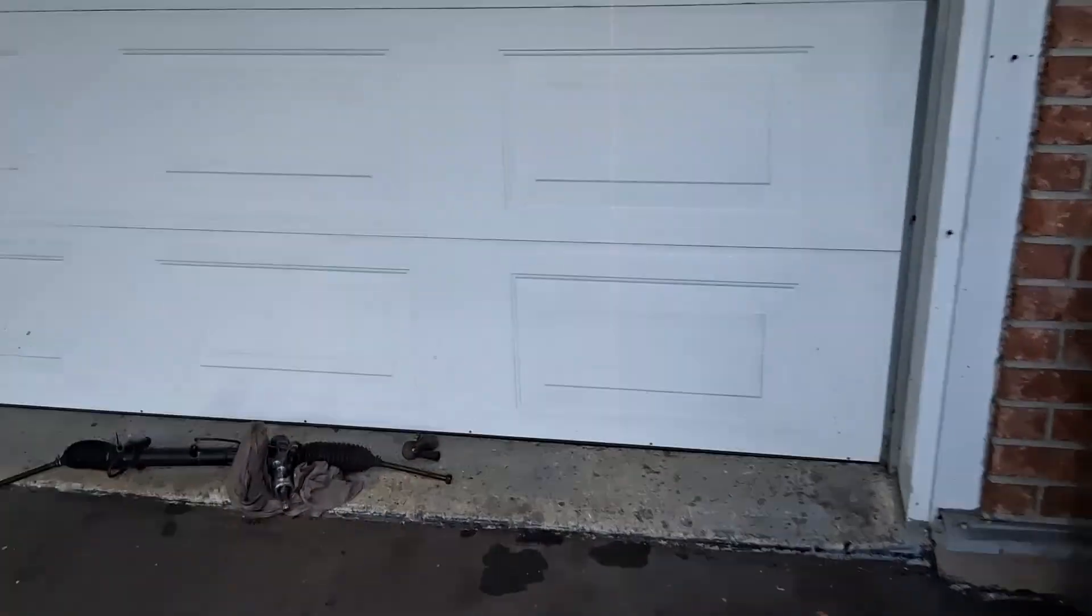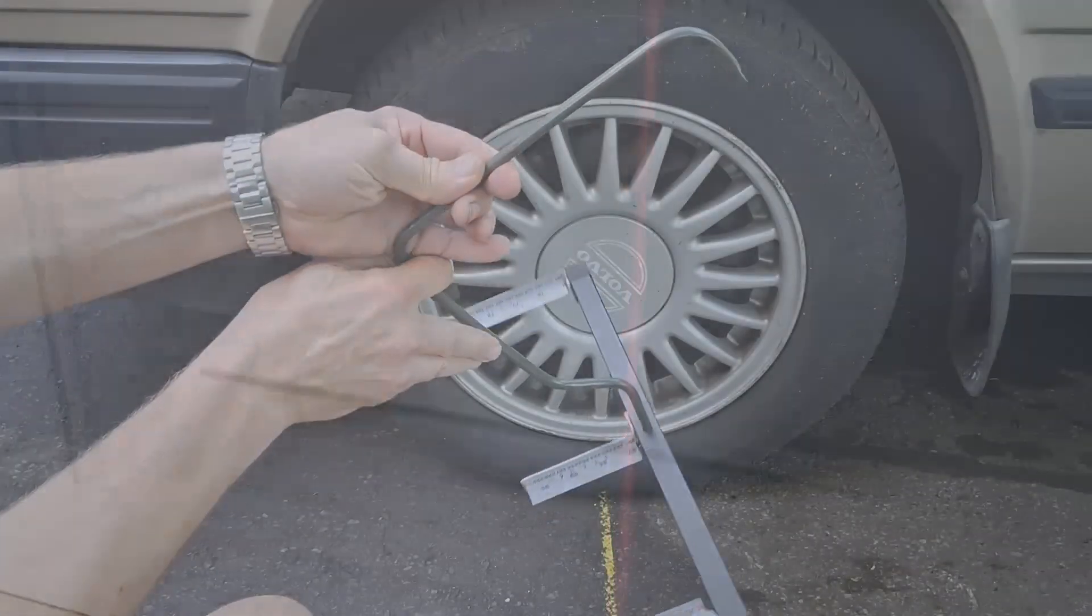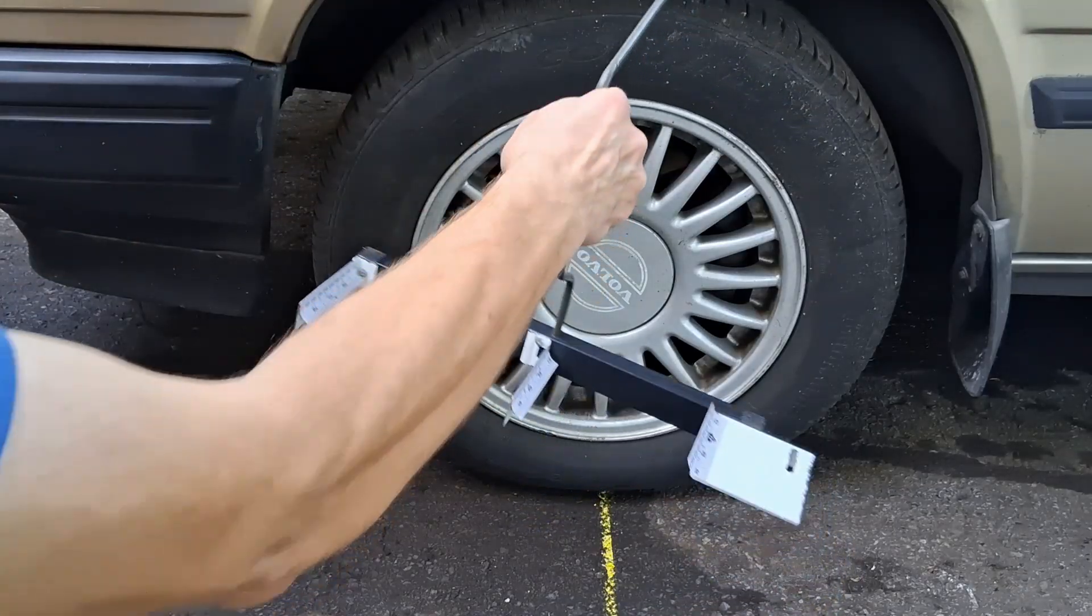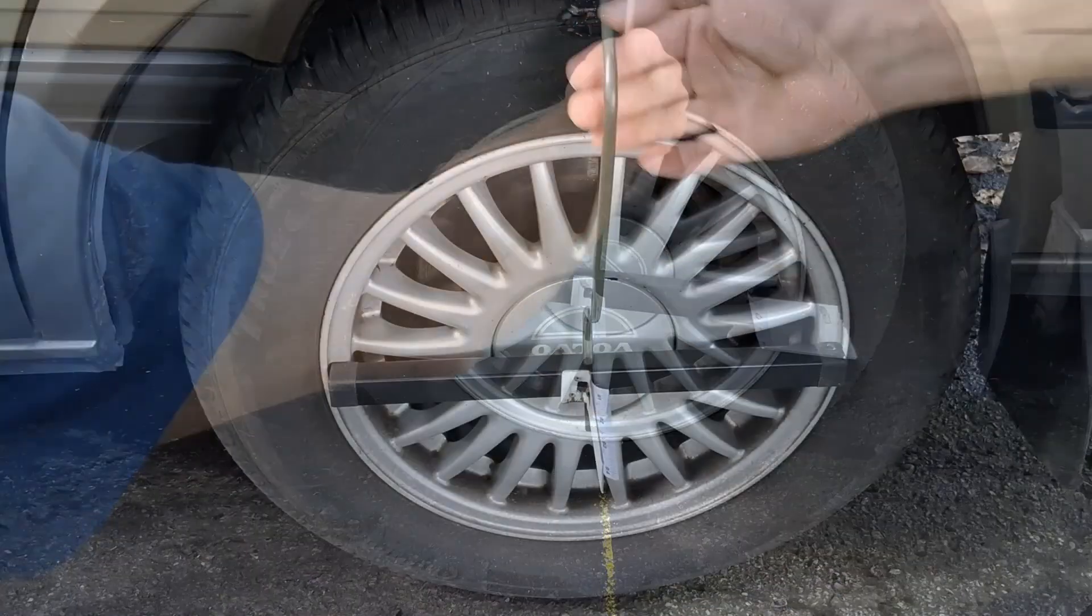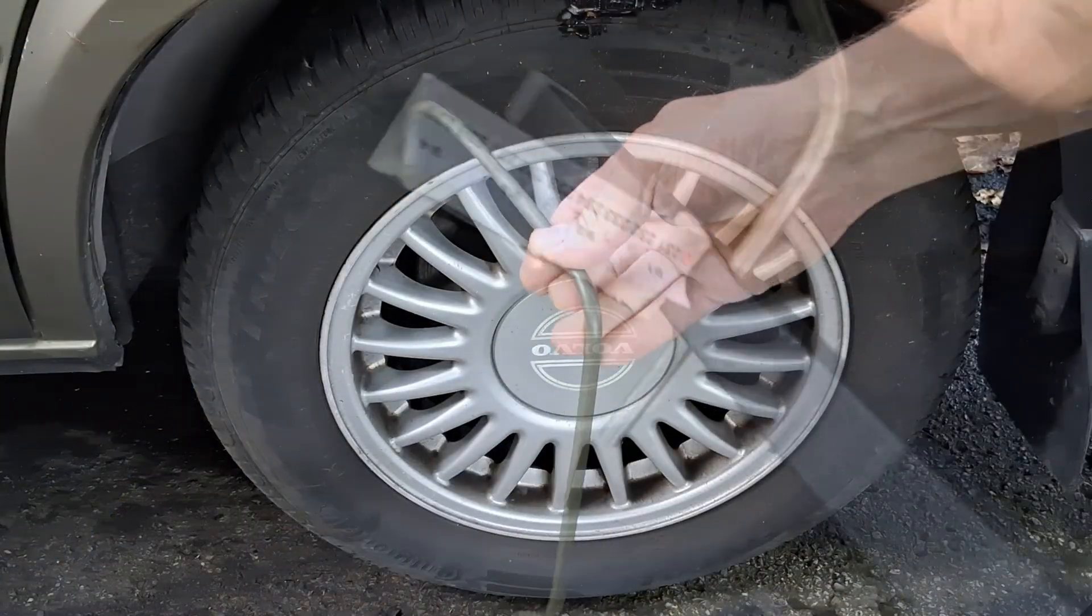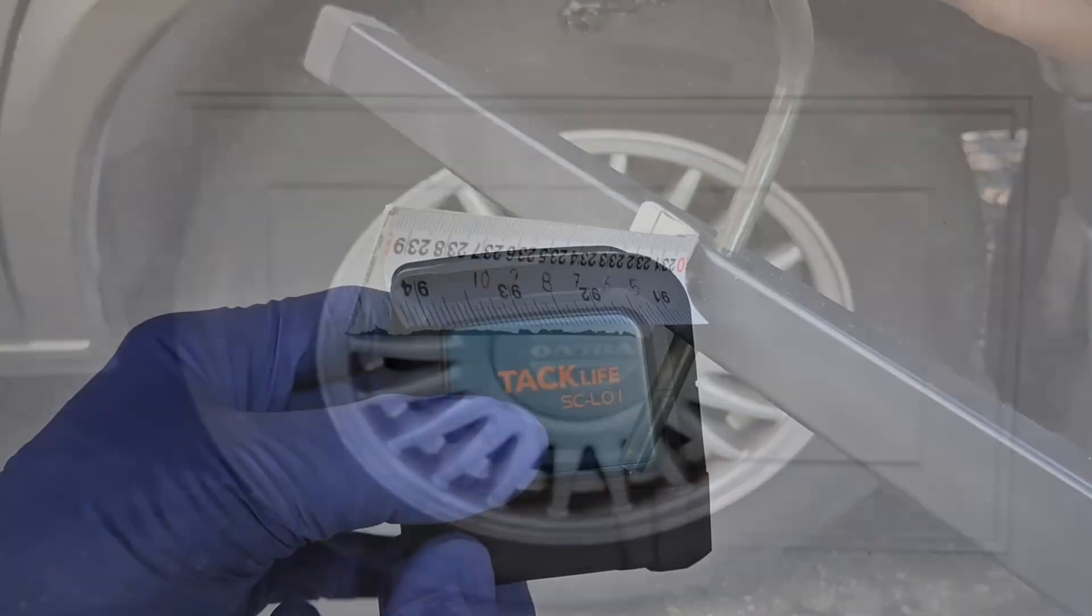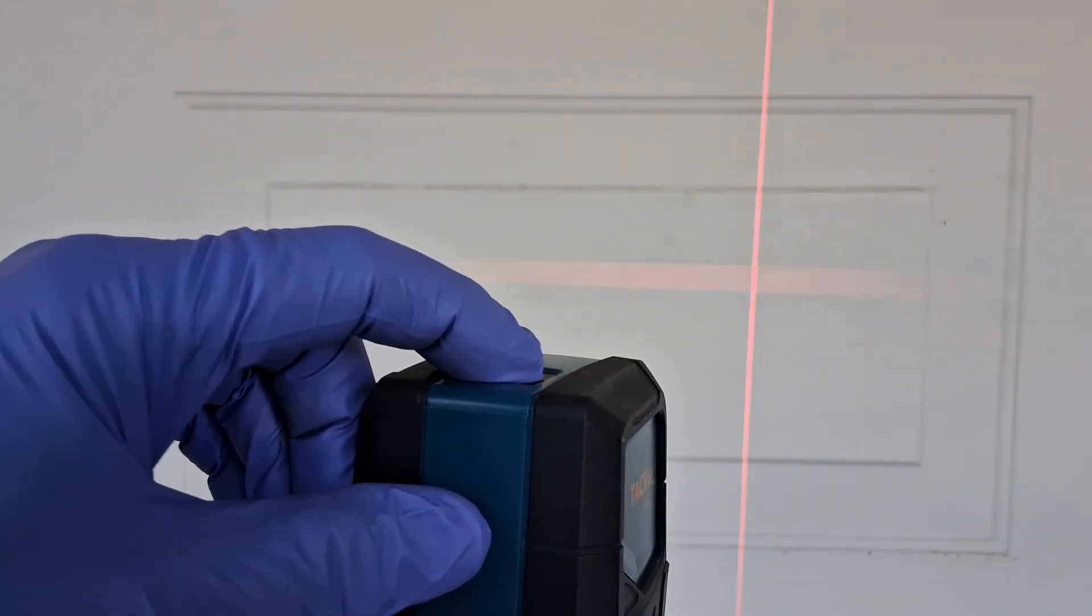To use my laser method to set toe in a car, you will need 1 garage door, 4 homemade wheel hangers with gauge attachments, and a laser that shoots vertical lines.